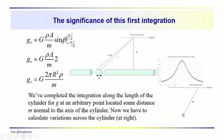Integrating cosine theta gives us sine of theta — we can verify since the derivative of sine theta is cosine theta. Evaluating from minus pi over two to pi over two gives us two. So the vertical component at this arbitrary point, located at distance m from the axis of the cylinder, equals G times 2 pi R squared times the density (or delta rho) divided by that distance m.